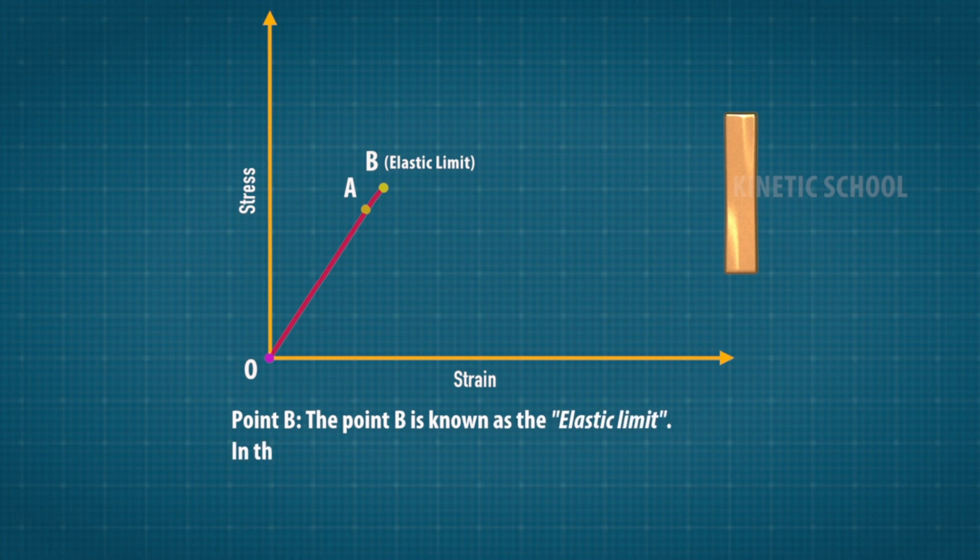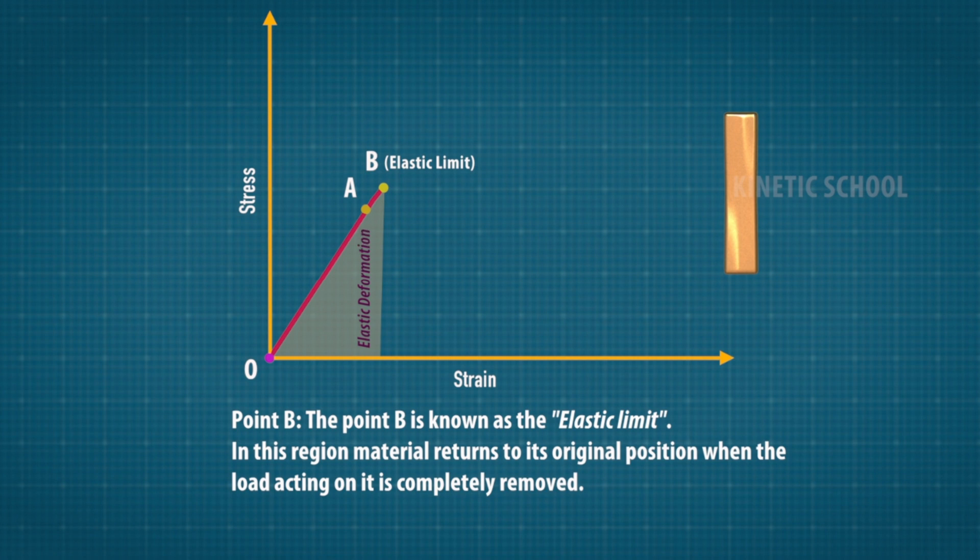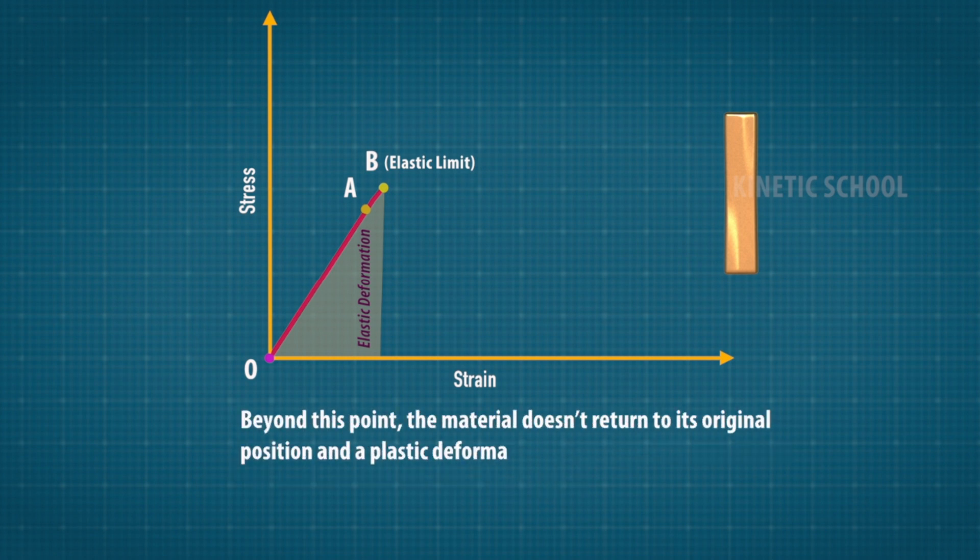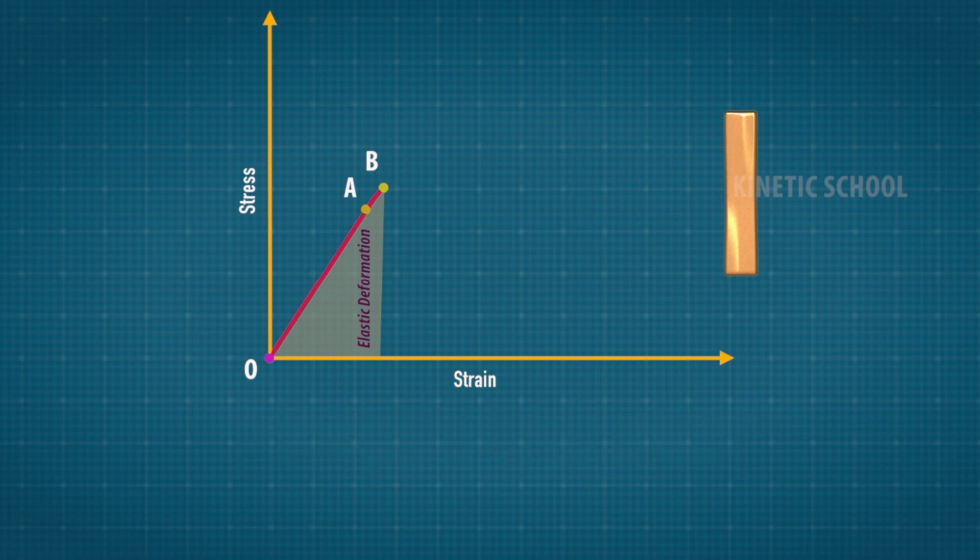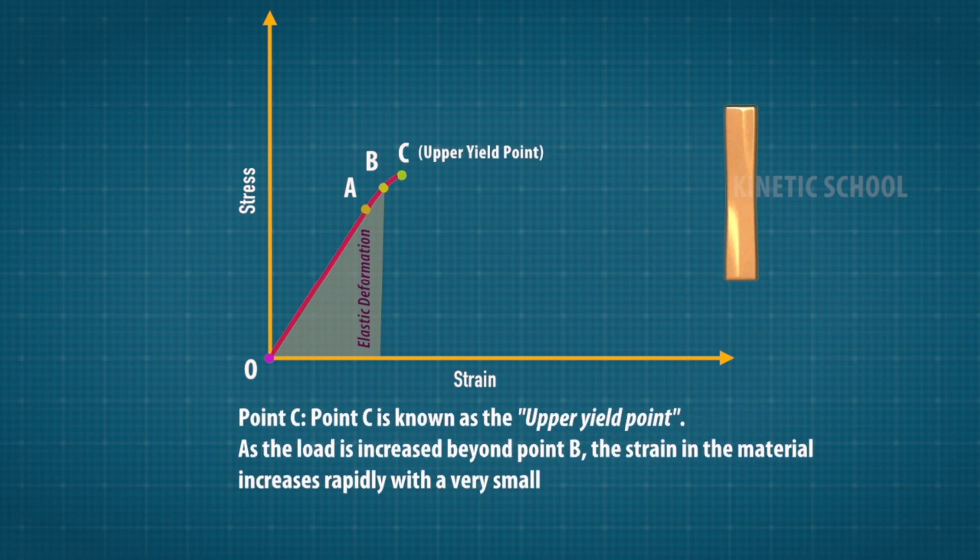Point B is known as the elastic limit. In this region, material returns to its original position when the load is completely removed. Beyond this point, the material doesn't return to its original position and plastic deformation starts to appear. Point C is known as the upper yield point. As the load increases beyond point B, strain increases rapidly with a very small increase in stress.